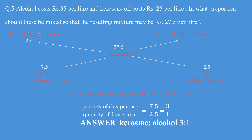Question 5: alcohol costs 35 per liter and kerosene oil costs 25 per liter. Cost price of the dearer is 35 and cost price of the cheaper is 25. In what proportion should these be mixed so that the resulting mixture costs 27.5 per liter? The mean price is 27.5. Calculation: 35 minus 27.5 equals 7.5, and 27.5 minus 25 equals 2.5. Quantity of cheaper upon quantity of dearer is 7.5 upon 2.5 which is 3 is to 1. So the ratio of kerosene to alcohol is 3 is to 1.